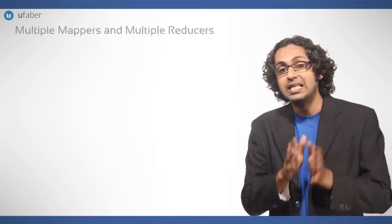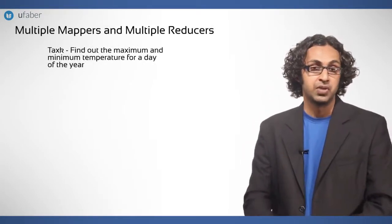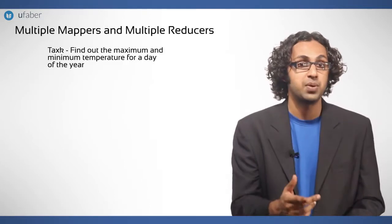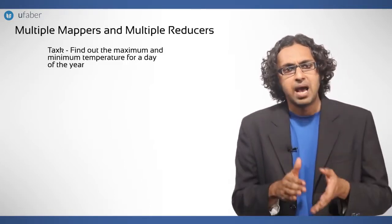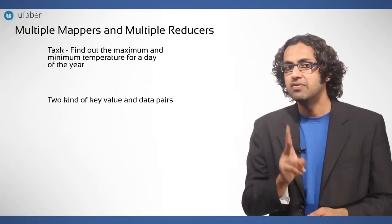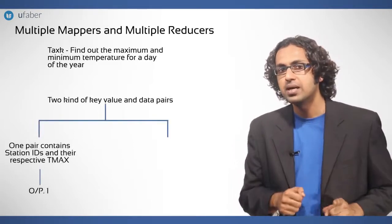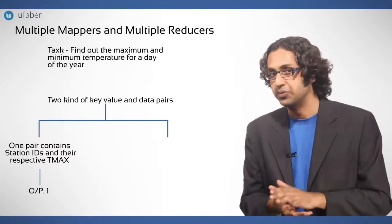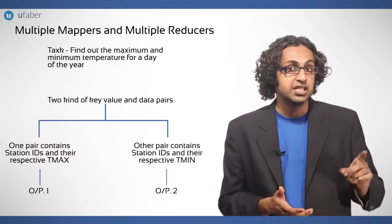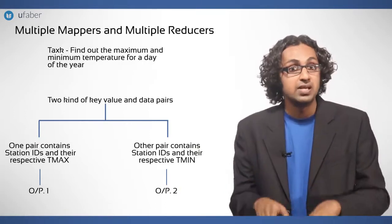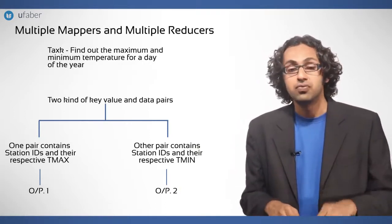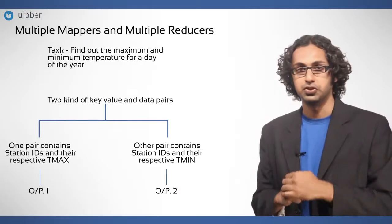Next, we look at multiple mappers and multiple reducers. Suppose the task is to find out the maximum and minimum temperature of a day for the year. In this case, mappers will generate two kinds of key value and data pairs. One pair contains station IDs and their respective T max and the other pair contains station IDs and their respective T min. Both kinds of results will be combined and shuffled to form two separate groups of outputs.